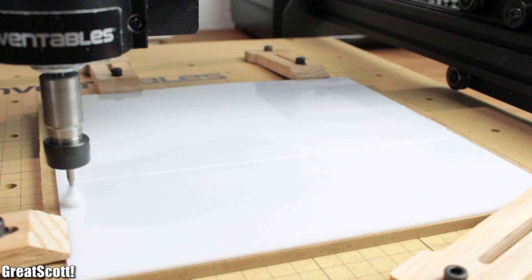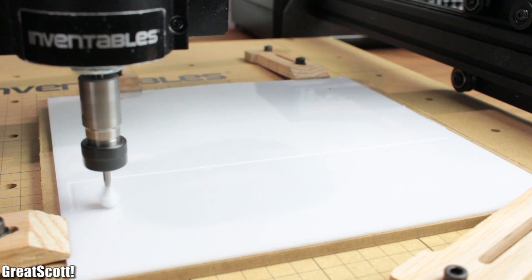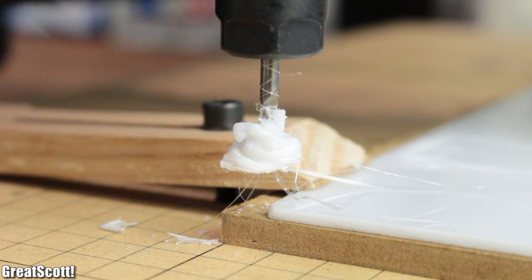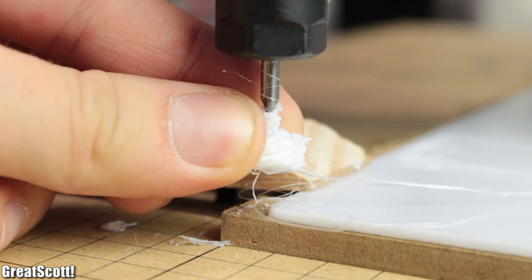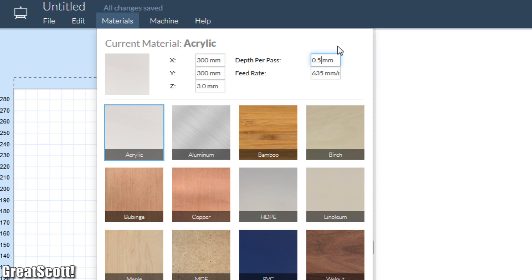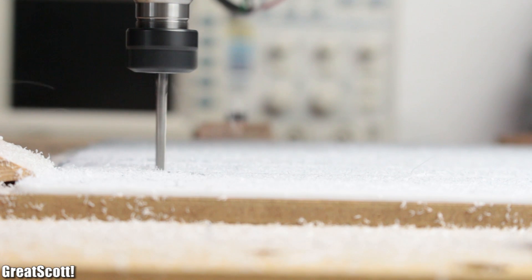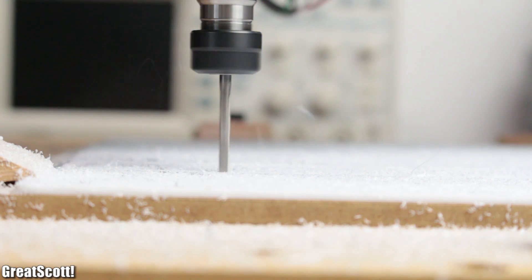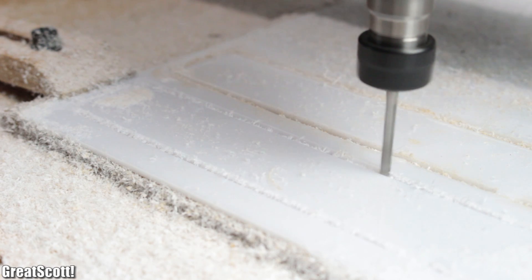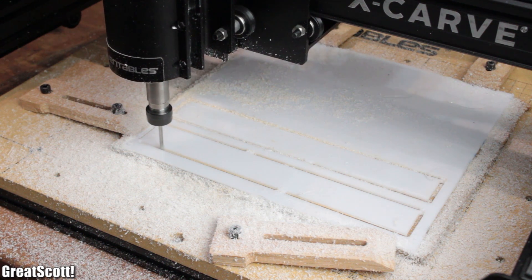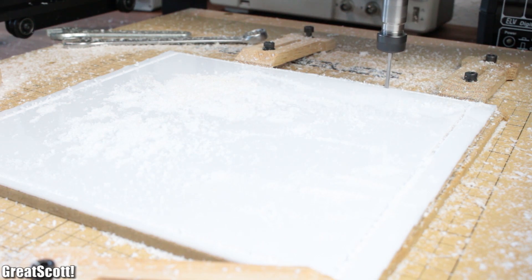The milling bits went too deep into the material and melted the acrylic glass, which immediately wrapped itself around the bits. The solution was to decrease the layer depth, and afterwards the milling process was a big success. But again, just because you don't have such a machine, doesn't mean that you cannot make this case.